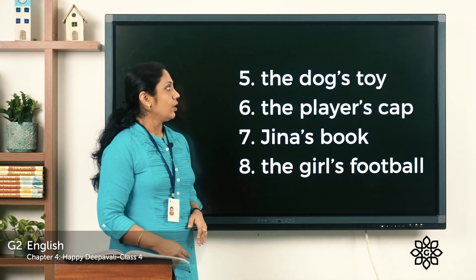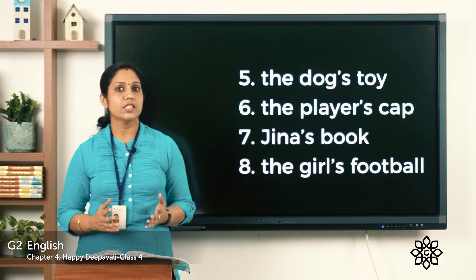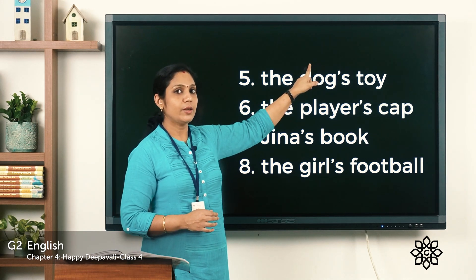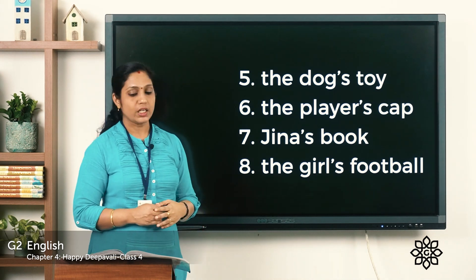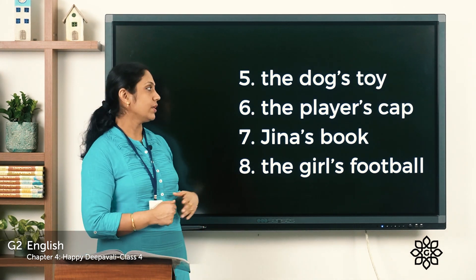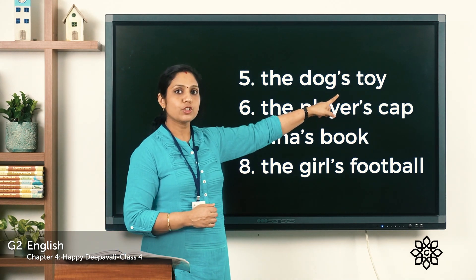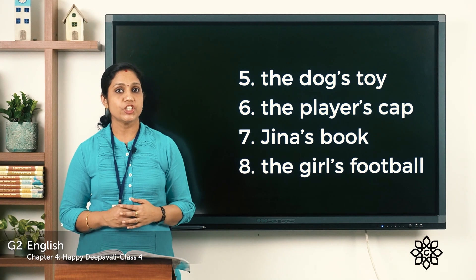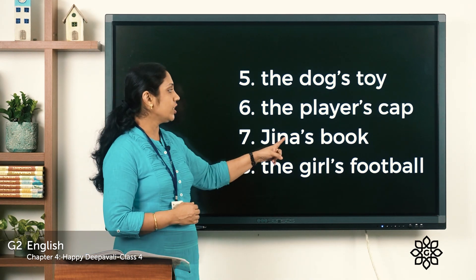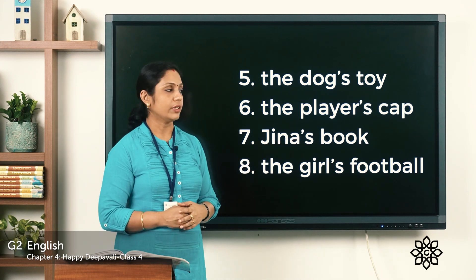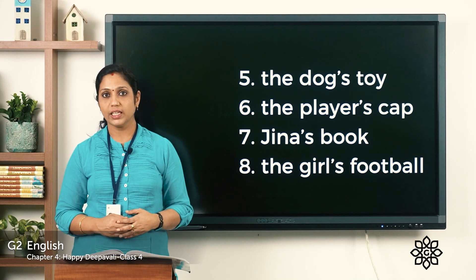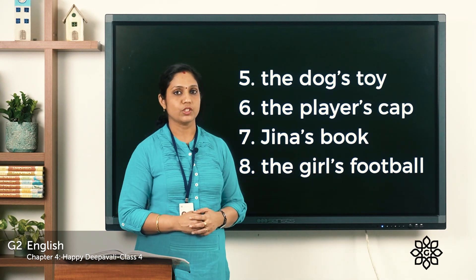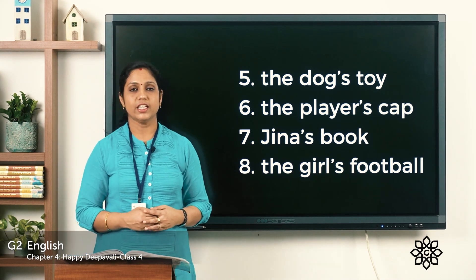Fifth: 'the dog's toy' — insert the apostrophe between g and s. Sixth: 'the player's cap' — insert the apostrophe between r and s. Seventh: 'Gina's book' — insert the apostrophe between a and s. Eighth: 'the girl's football' — insert the apostrophe between l and s. So the apostrophe should now be clear to you.